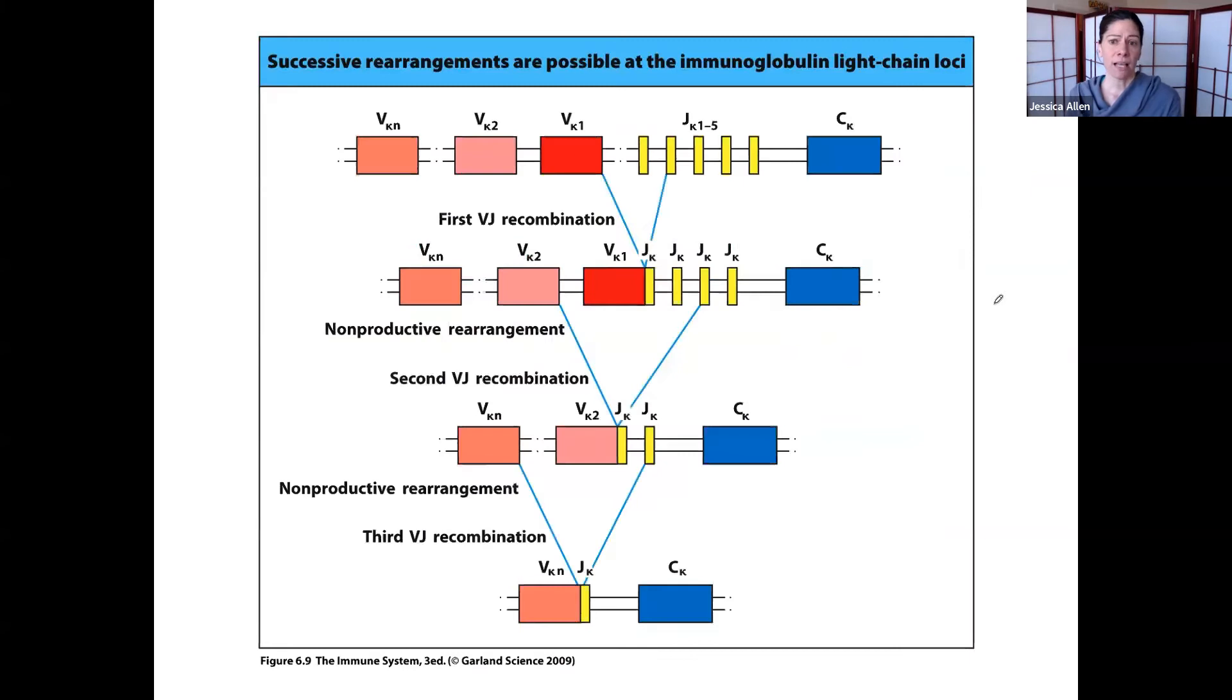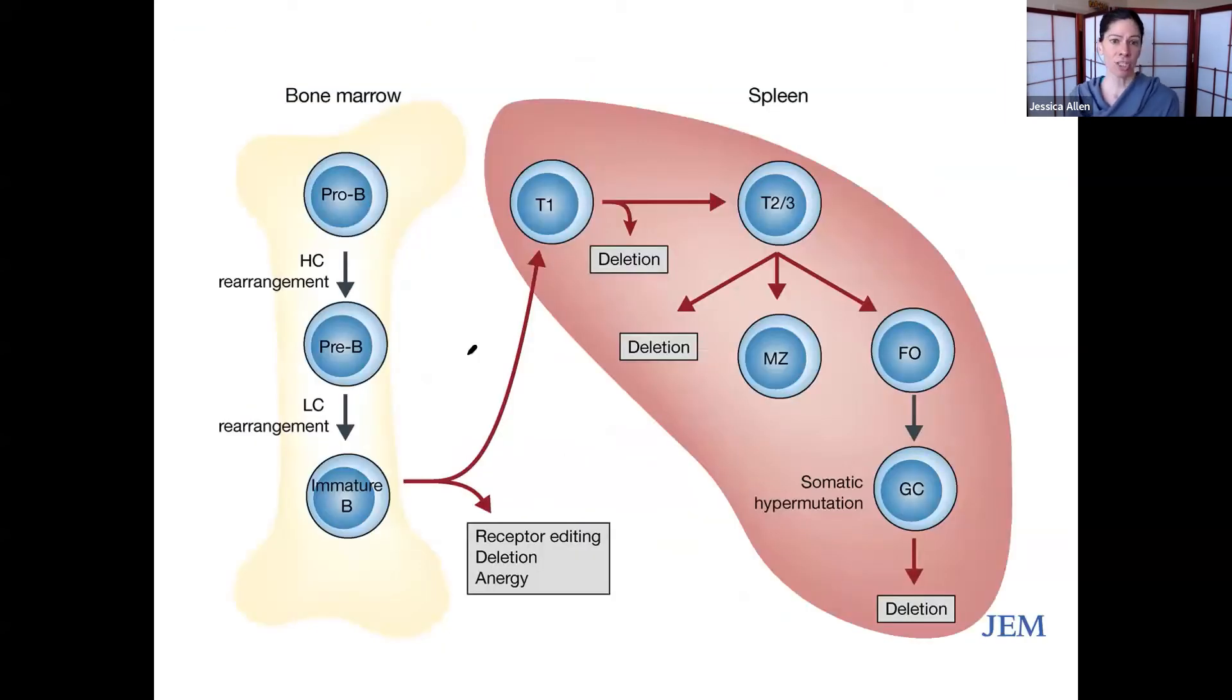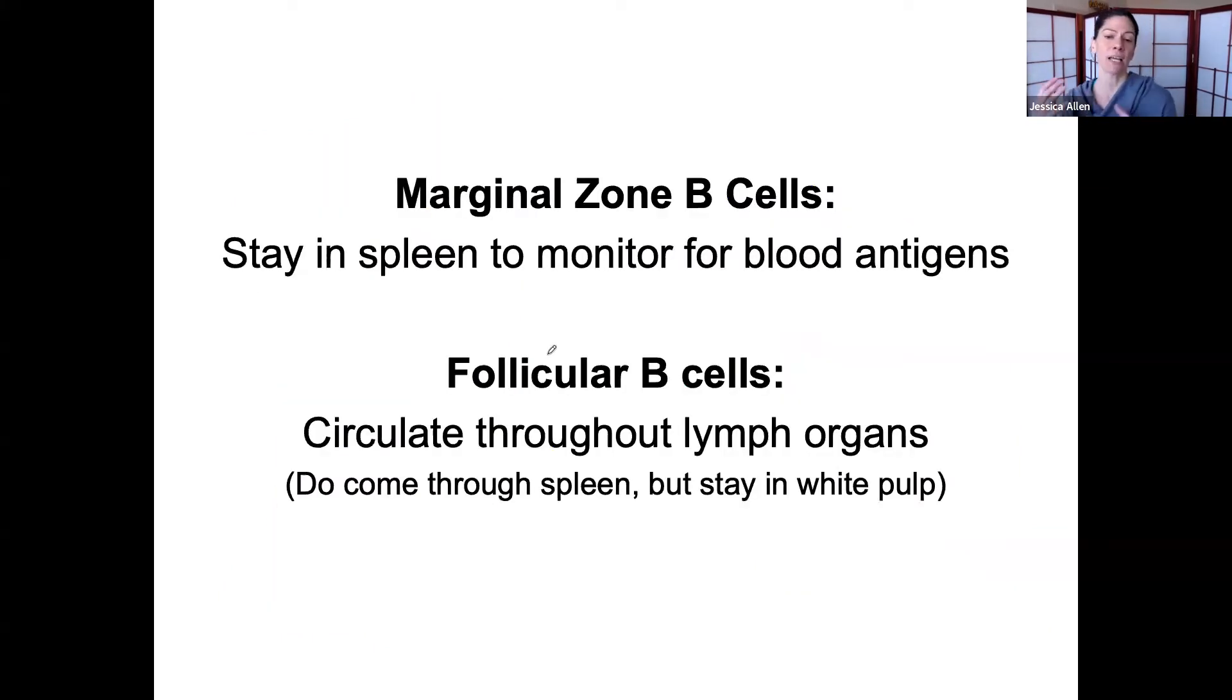Now, once the immature B-cell has made it through selection, it can actually leave the bone marrow. Some B-cells will hang out in the bone marrow. They may go to the spleen. It really depends. Some will go through the lymphoid organs. B-cells are a little bit fuzzier than T-cells. T-cells are very specifically going to go places.